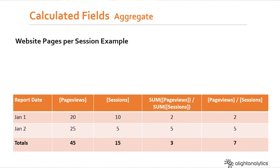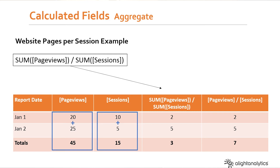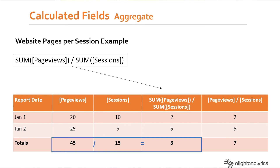Now let's take a look at what changes when we aggregate the calculation first. We have sum of page views divided by sum of sessions. Tableau is now going to take the total page views for all the data that we have, the total sessions for all the data that we have. It's going to do that calculation first — take the sum of both of those fields and divide page views by sessions. This result gives us three, which is our accurate representation of how many pages were looked at by viewers during a session.